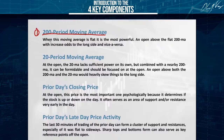Item one: find out where is the 200-period moving average on that item. Item number two: the 20-period moving average — where is the 20-period moving average on your stock or the item that you trade? Item number three: find out where yesterday's closing price was. If you're trading Microsoft, where was yesterday's last closing price? That's item number three.